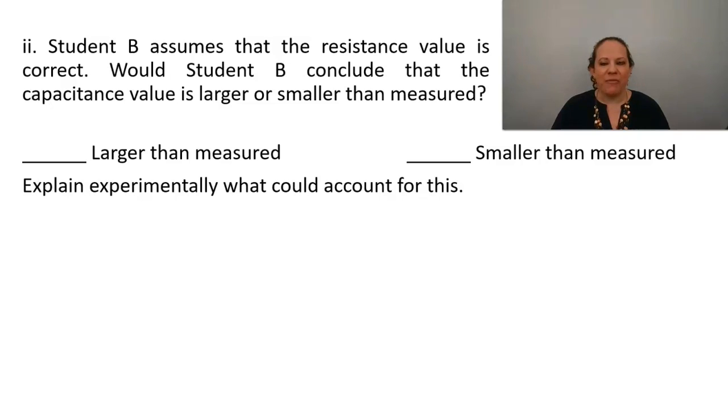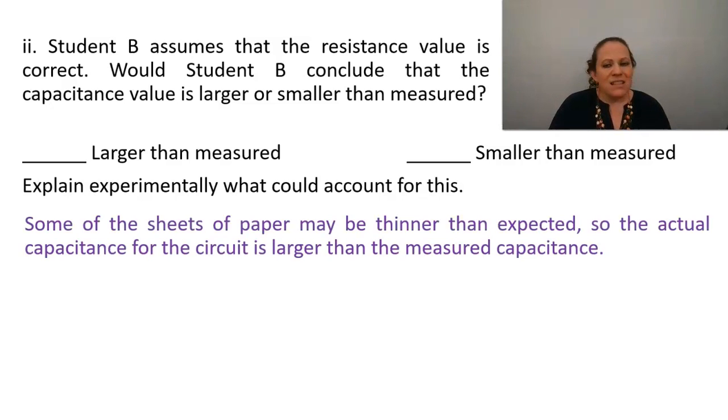So we'll want to check larger than measured and our point here is just for an appropriate explanation. And F part two student B assumes that the resistance value is correct would student B conclude that the capacitance value is larger or smaller than measured and explain experimentally what could account for this again here's an example. Some of the sheets of paper may be thinner than expected so the actual capacitance for this circuit is larger than the measured capacitance. And once again our point is just going to be for an appropriate explanation.